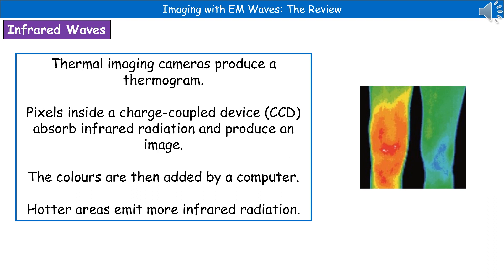You can see one of these thermograms on the right — two knees are shown. The right-hand knee is perfectly normal, whereas the left-hand knee shows red and orange, telling us it's emitting more infrared. That's a sign of an infection.